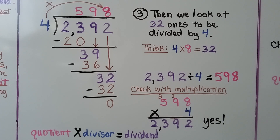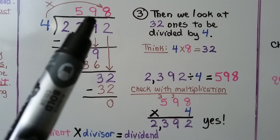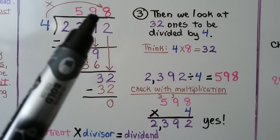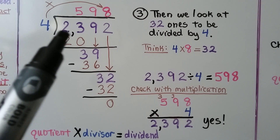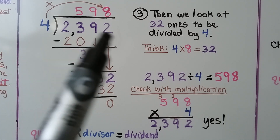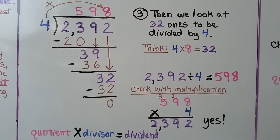Because these are inverse operations, we can check our math with multiplication. We just have the quotient multiplied by the divisor and it should equal the dividend. So we take the 598, multiply it by 4, and it should equal this dividend, 2,392. And it does, so we know we did our math correctly.